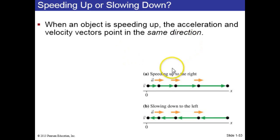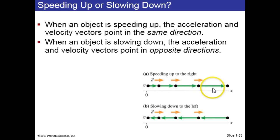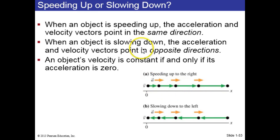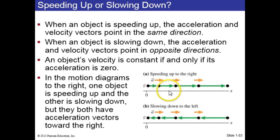When an object is speeding up, that means the acceleration vectors, these yellow vectors, and the velocity vectors, the green vectors, are in the same direction. And when an object is slowing down, the velocity and acceleration vectors point in opposite directions. Here's a particle speeding up. Here's a particle that's slowing down. Its velocity is to the left, and its acceleration is to the right.